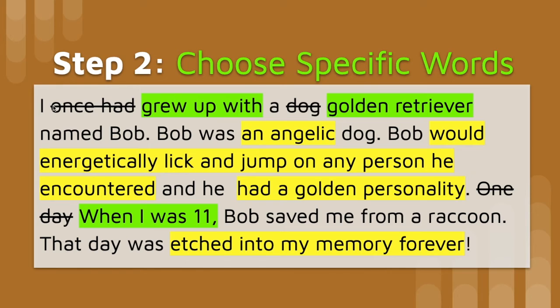This was a little picky, but the original says 'I once had a dog' — well, when? When did you have this dog? Make it more specific in the timing. So I said 'I grew up with a dog' to place it in the time when I was young. And at the bottom I made it even more specific by switching 'one day' to 'when I was 11' — so you have a very specific time with specific words.